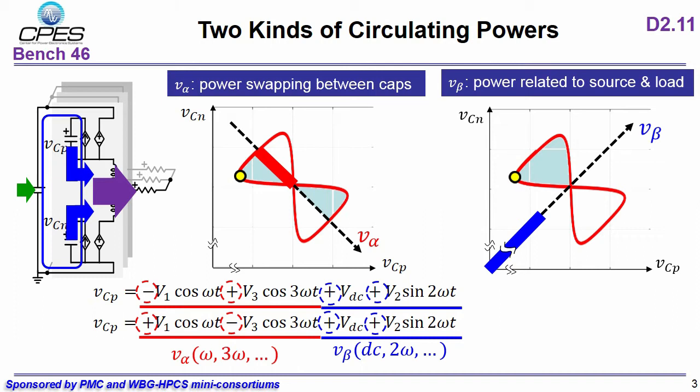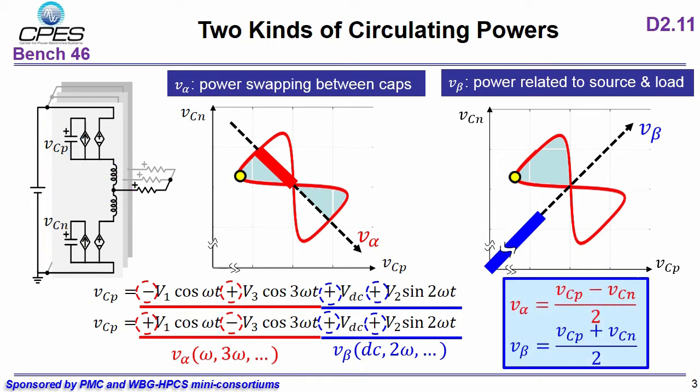So V-beta provides us the power related to source and load. And finally, we can extract these two kinds of circulating power, the power swapping between two caps and the power related to source and load from these two equations.